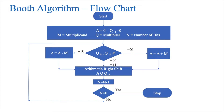If the combination of Q naught and Q minus 1 is 0,1 then we add the content of A with M, then shift, reduce N by 1, and check whether N equals 0. If the combination is 1,0 then we perform A equals A minus M, store it back in A, and again perform the right shift, N minus 1, and check N equals 0. This is the basic Booth's algorithm procedure.